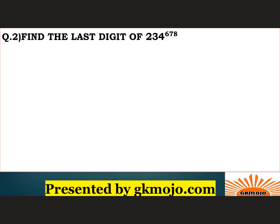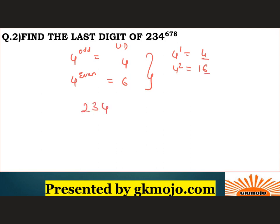The next question is: find the last digit of 234 to the power 67. Write down this rule: 4 to the power odd gives unit digit 4 only, and 4 to the power even gives unit digit 6. You can cross-check — 4 to the power 1 is 4, and 4 to the power 2 is 16, so unit digit is 6. Now 67 is odd, so the unit digit of 234 to the power 67 is 4. Hence the correct answer is 4.